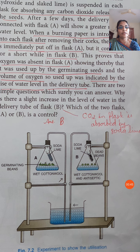In flask B, boiled bean seeds are there, which are dead bean seeds. Wet cotton wool is used and some antiseptic is also used in that cotton to prevent the bacterial growth inside the flask. Otherwise, bacteria will grow there, breathe, and produce carbon dioxide. So, antiseptic lotion is used in flask B.